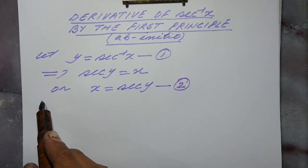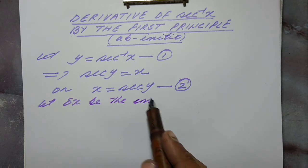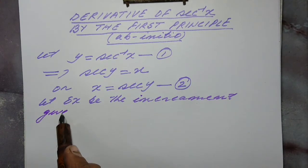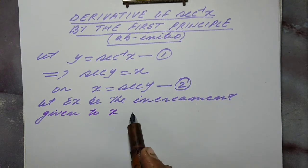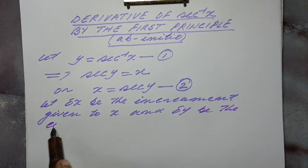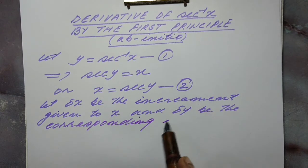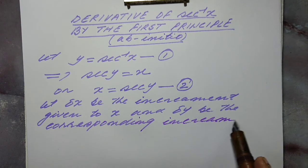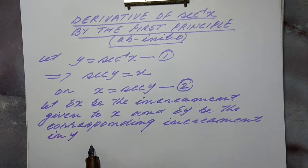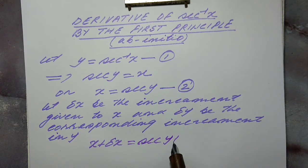Now let delta x be the increment given to x, and delta y be the corresponding increment in y. Then equation number 2 becomes: x plus delta x is equal to sec of (y plus delta y).